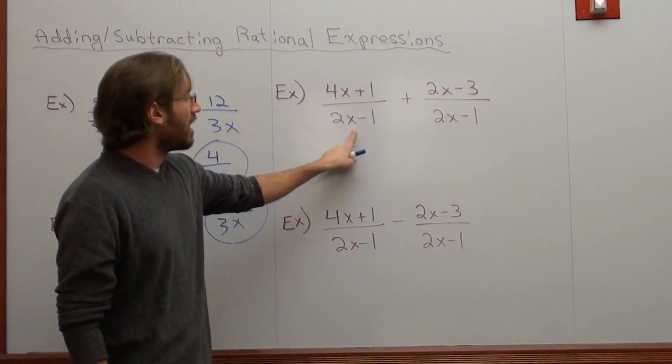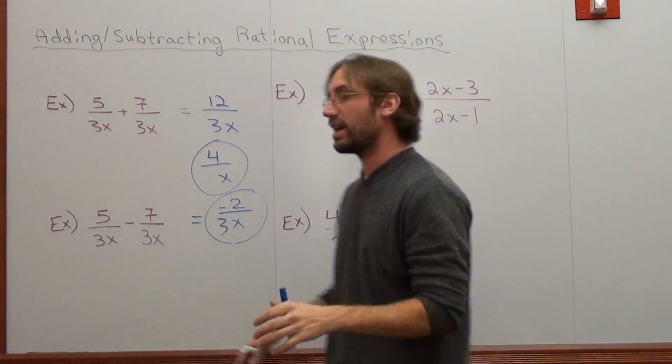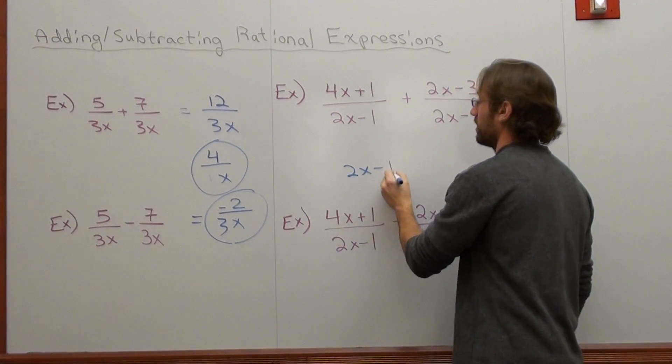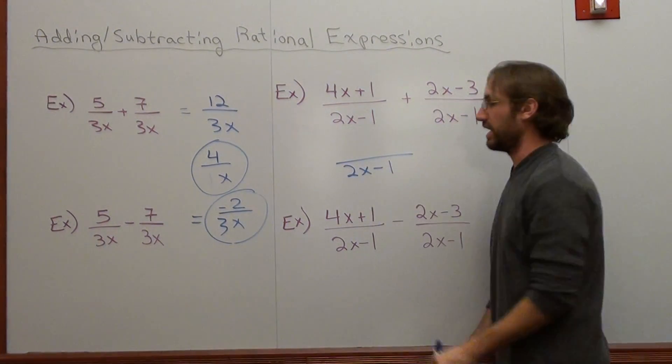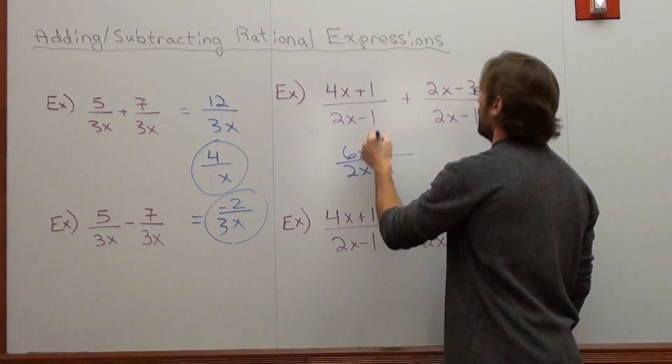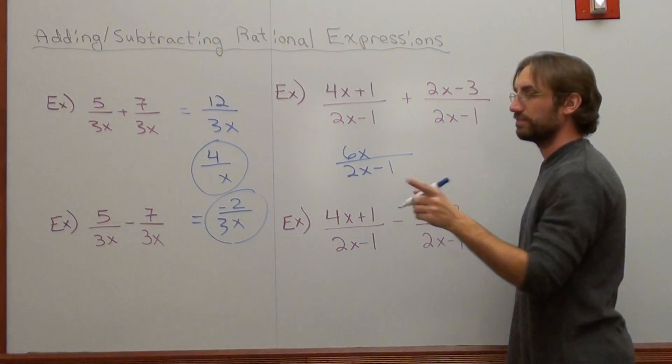Next one. The denominators are the same, so I combine it as one fraction. I leave the denominator alone, 2x subtract 1. And I have 4x plus 2x, which is 6x. And I have 1 plus negative 3, which is negative 2.